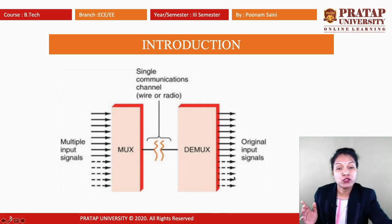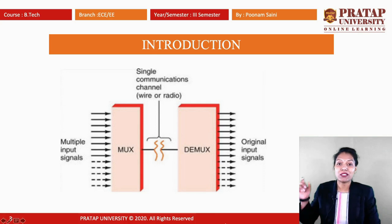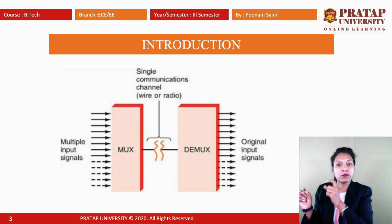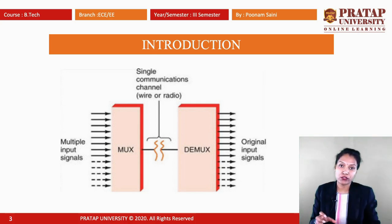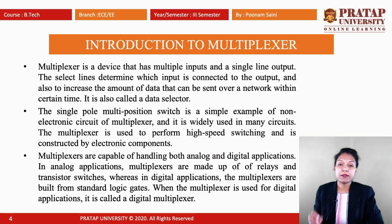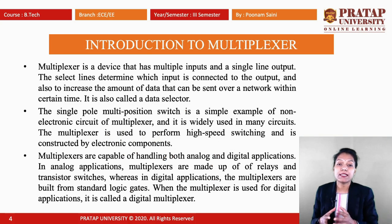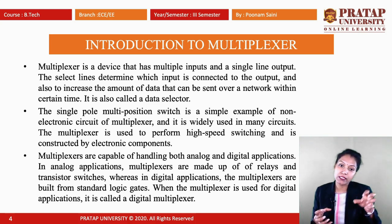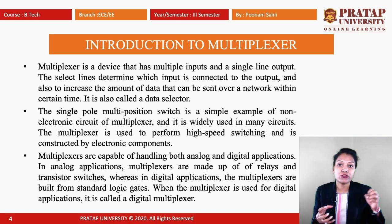The original signal can be recovered after it passes through the mux first and then the demux. A multiplexer is a device that has multiple inputs and a single output line. The select lines determine which input is connected to the output, so we can select which input line is routed to the output.